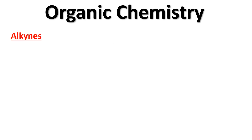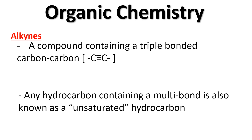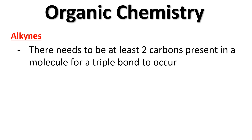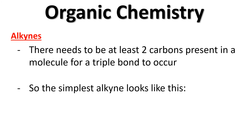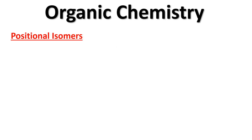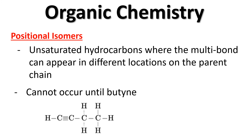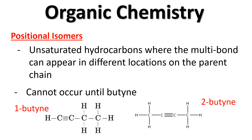Now for alkynes — triple bonds. A multi-bond is unsaturated, so alkynes are also considered unsaturated hydrocarbons. There needs to be at least two carbons for a triple bond to occur. The simplest alkyne is ethyne — two carbons with a triple bond straight across. Alkynes also have positional isomers, which cannot occur until butyne: 1-butyne has the triple bond at the first position, and 2-butyne has it in the middle. Make sure to fill in hydrogens, since carbon wants four bonds.